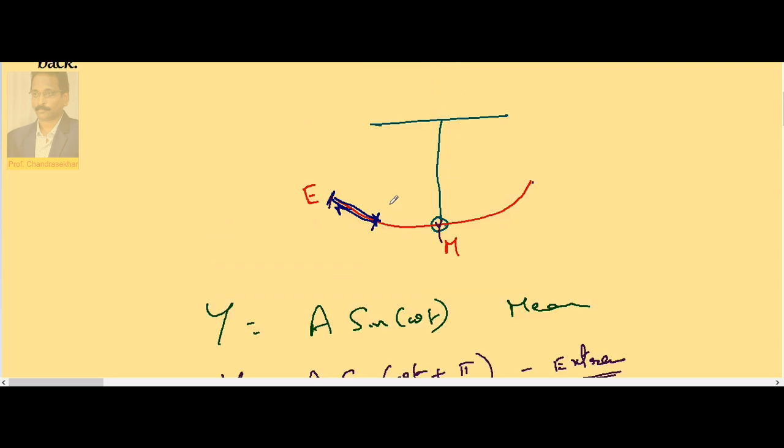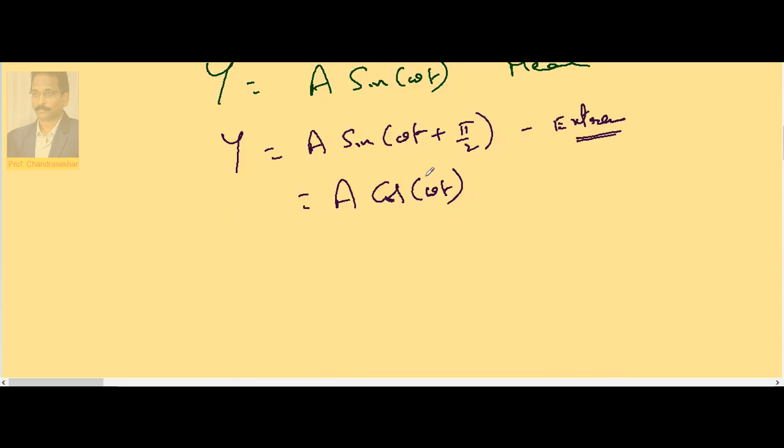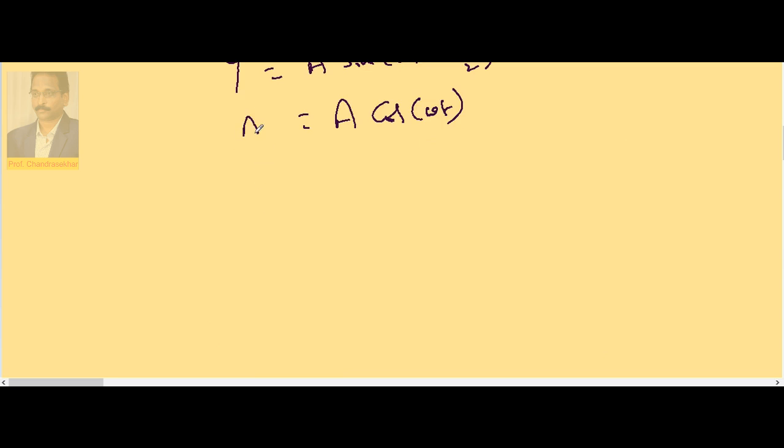Now let us calculate the time taken to move from this point to this point. So here y is nothing but half the amplitude. So in the place of y, put A/2. Now A and A cancels. So cos ωt = 1/2.